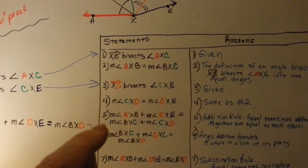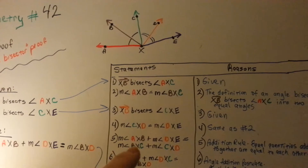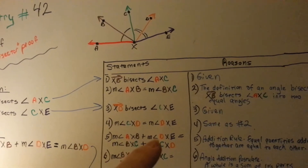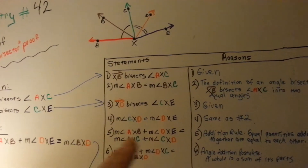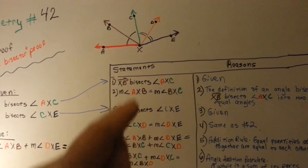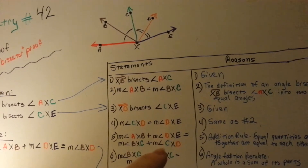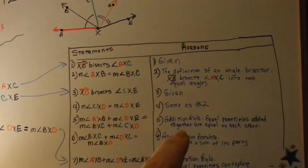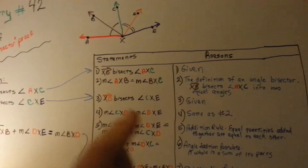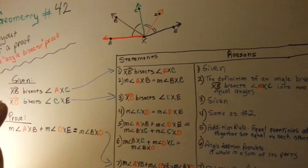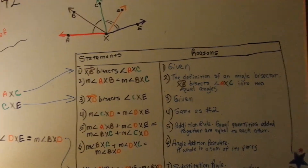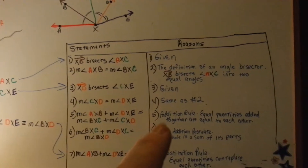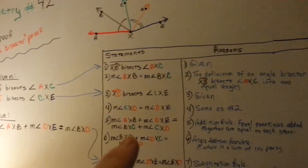Now we're on to step 5. The measure of axb — the red and brown angle — plus the measure of dxe — the orange and purple — is equal to the measure of bxc — the brown and green — plus the measure of cxd — the green and orange. The reason is the addition rule: equal quantities added together are equal to each other. Because we proved both pairs equal by the angle bisector definition, we can now add them.